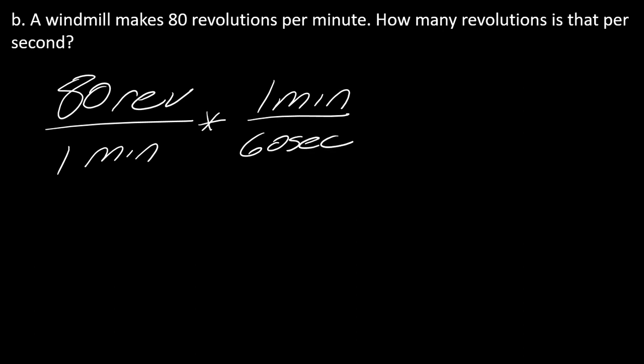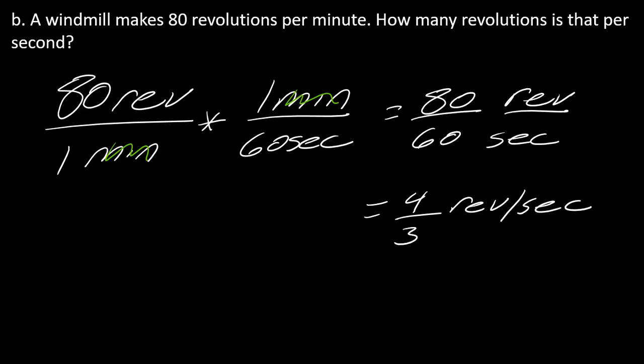My minutes will cancel out like that, so I'm left with 80 over 60 revolutions per second. That's going to come out to four-thirds of a revolution per second, or one and one-third of a revolution per second.